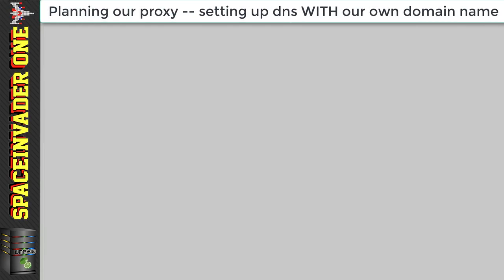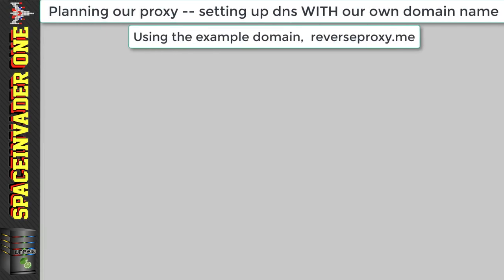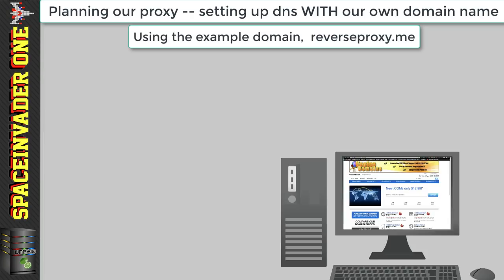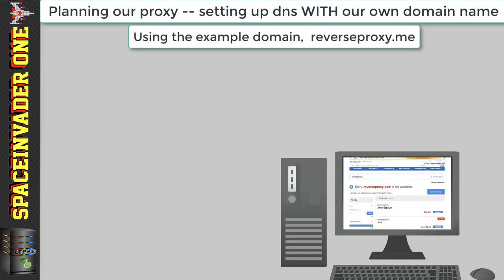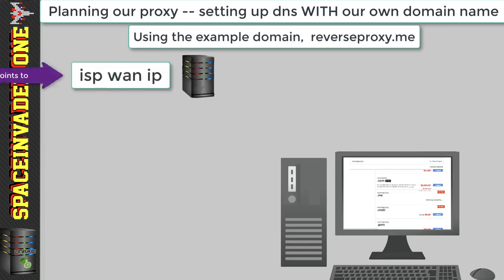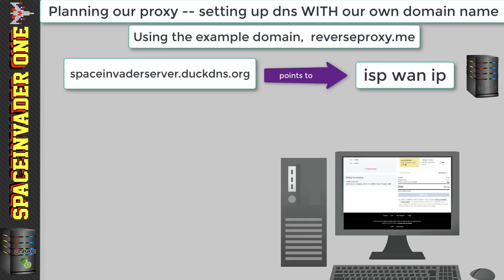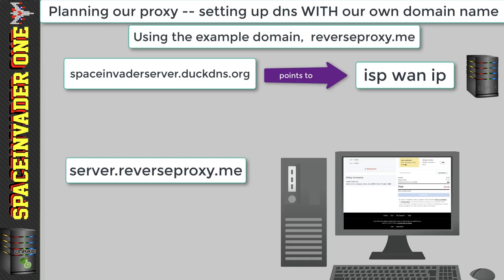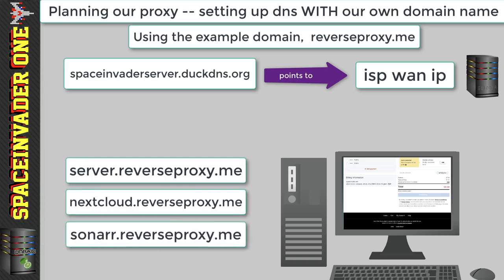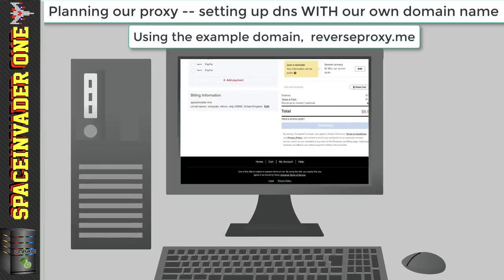Now let's look at how we'd plan things if we do have our own domain name, using the domain reverseproxy.me. I'll quickly register that domain. With our domain, we're still going to use DuckDNS to track our IP, but we only need one instance of it — spaceinvaderserver.duckdns.org. I want three subdomains: server.reverseproxy.me, nextcloud.reverseproxy.me, and sonar.reverseproxy.me. For each of these subdomains we're going to create a CNAME that points to spaceinvaderserver.duckdns.org, which in turn points to our WAN IP, so all subdomains will always resolve to our server.